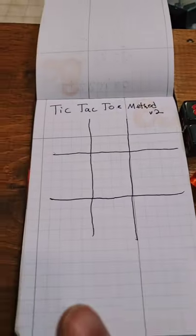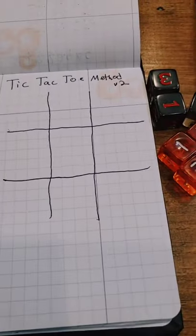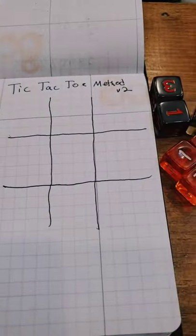All right, we're back with Tic-Tac-Toe Method for Rolling D&D Stats version 2. I did one before where we did a grid with different full numbers.